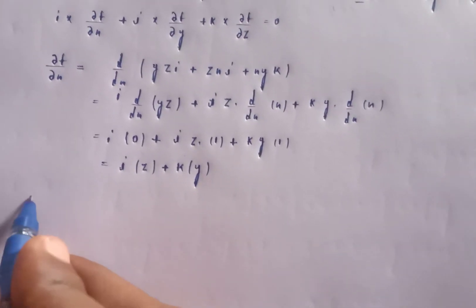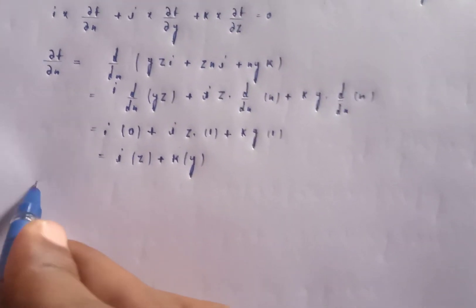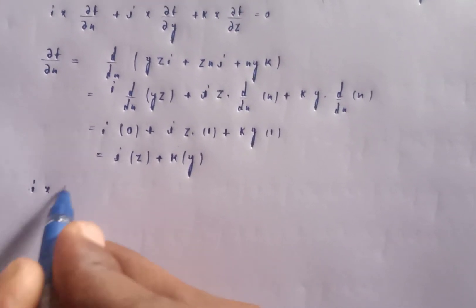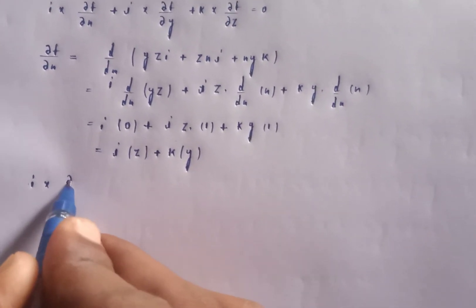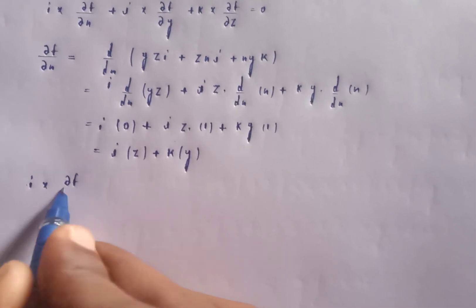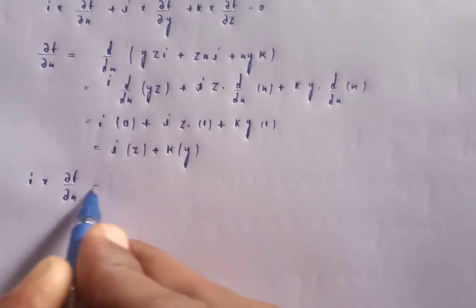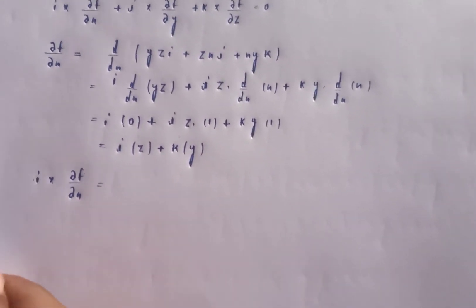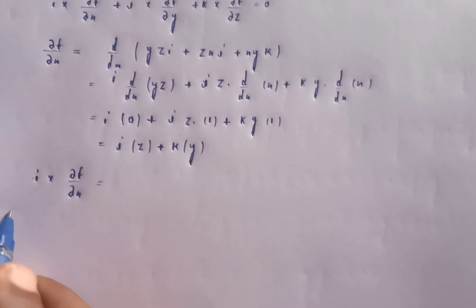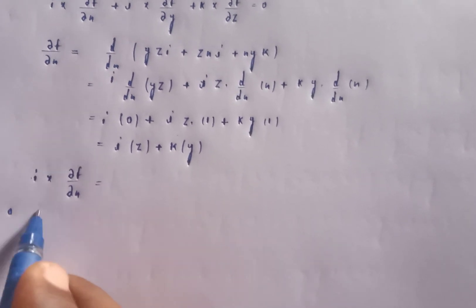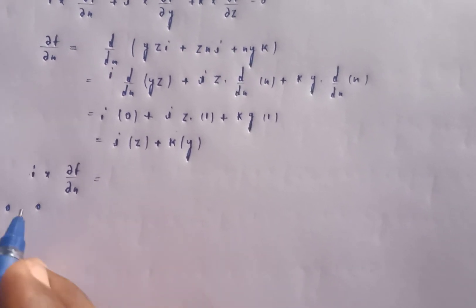Now compute i cross ∂f/∂x. Setting up the determinant with i, j, k in the first row.